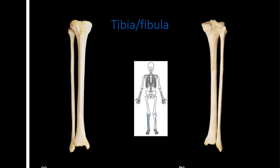The femur's condyles sit on top of the tibia, which has tibial condyles as well. On the anterior side of the tibia is a bump called the tibial tuberosity — this can be very prominent in people who had Osgood-Schlatter's disease as children, which caused it to grow significantly. The tibia has a medial malleolus and the fibula has a lateral malleolus, one on either side of the ankle.